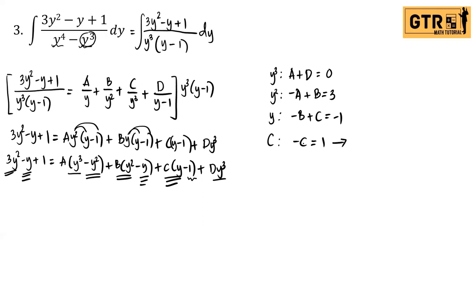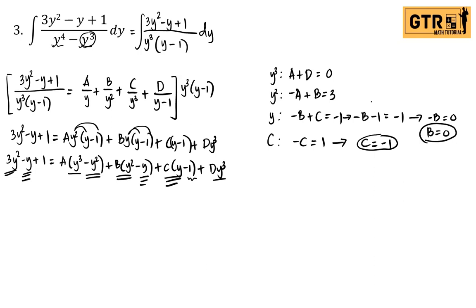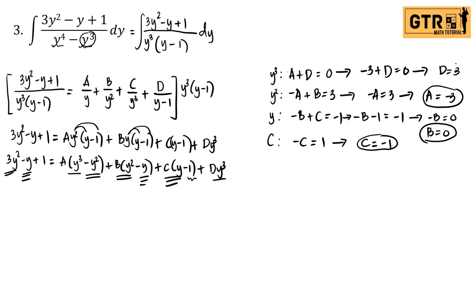Since C equals negative 1, substituting into the y equation: negative B minus 1 equals negative 1, so negative B equals 0, meaning B equals 0. Since B equals 0, from the y² equation: negative A equals 3, so A equals negative 3. From y³: negative 3 plus D equals 0, so D equals positive 3.